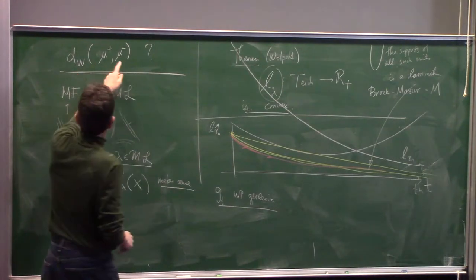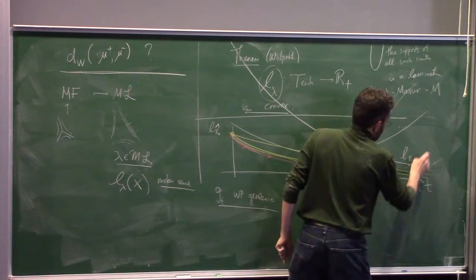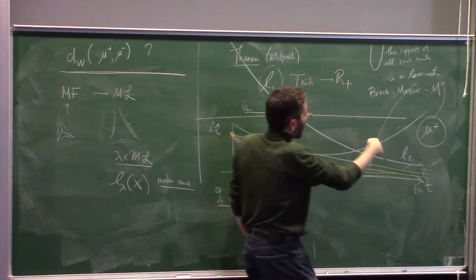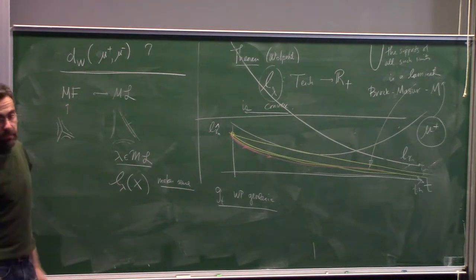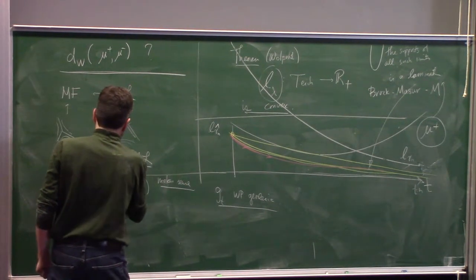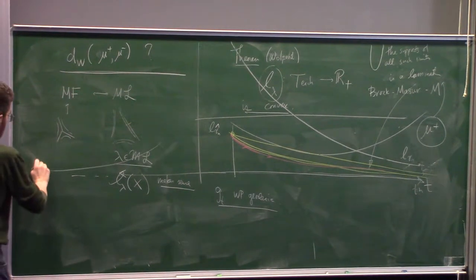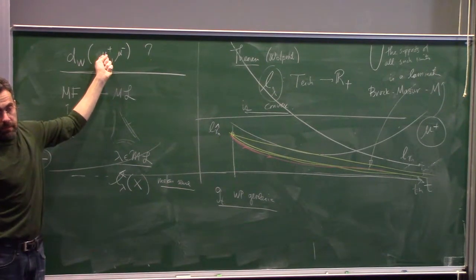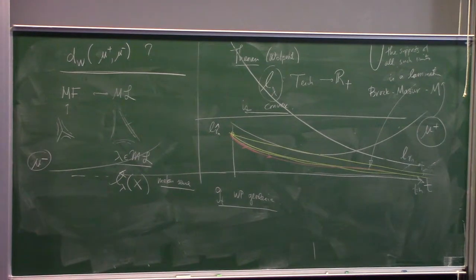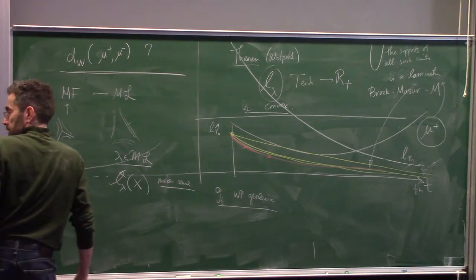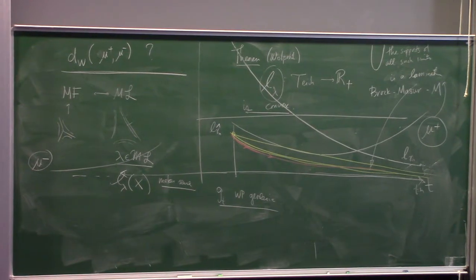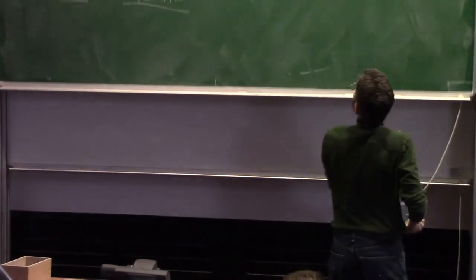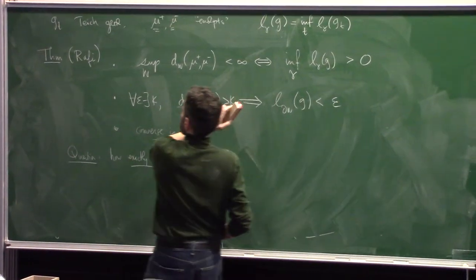We call that lamination the ending lamination of the ray. If you go in positive time, you get a lamination called μ+. Now it's a lamination without a measure - the measure is forgotten because we didn't know what was happening with the measures. Going in the opposite direction gives μ-. So now we have some data to ask about.